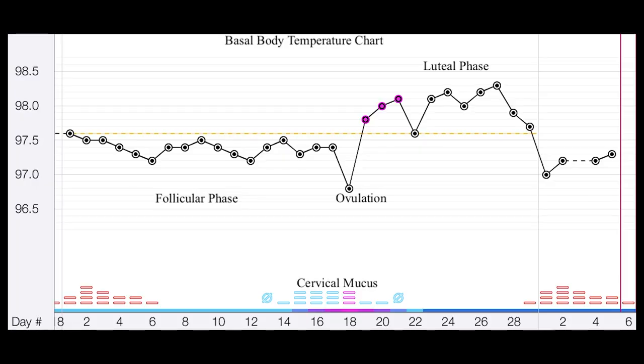Cervical mucus and cervical position give you an indication of when you're about to ovulate. They change throughout the follicular phase and tell you when ovulation is approaching. Basal body temperature will actually show you after you've ovulated — your temperature chart should show low temperatures throughout the follicular phase, then a very noticeable rise right after ovulation, continuing higher through the luteal phase until your period or a confirmed pregnancy.